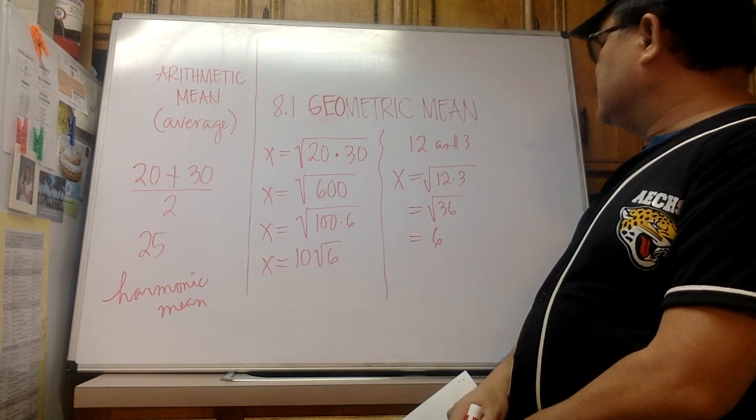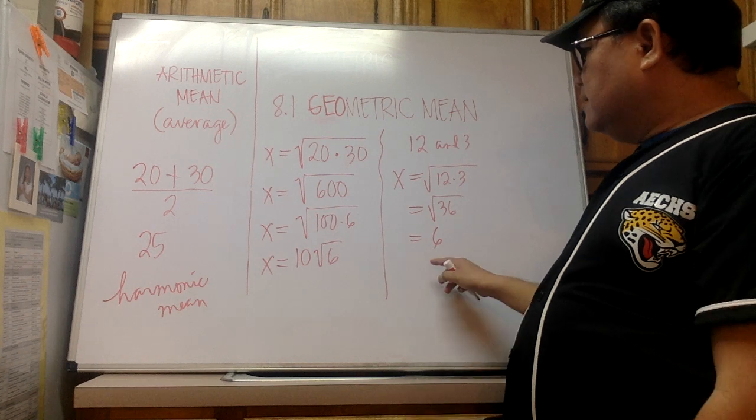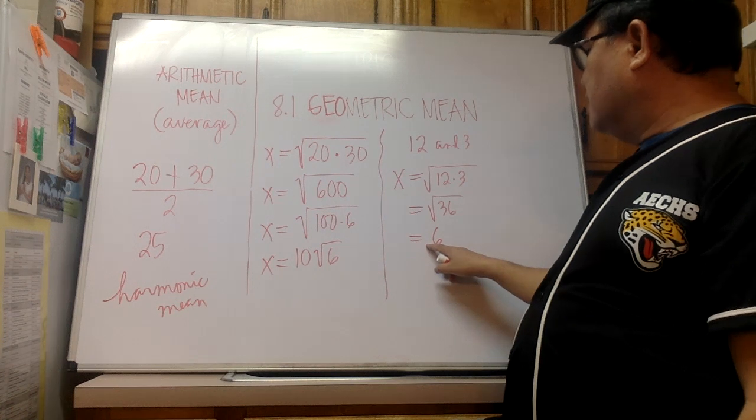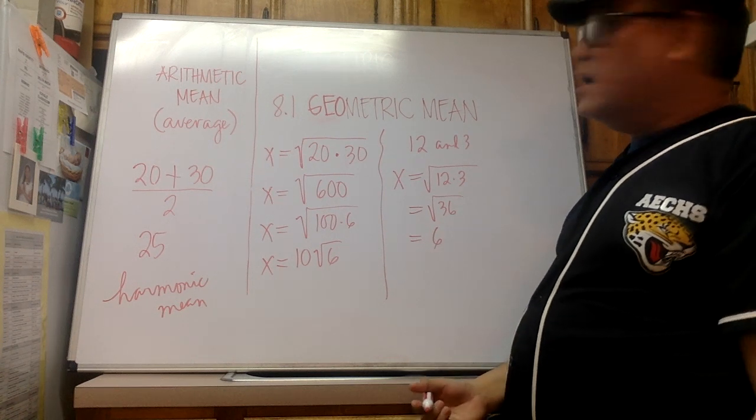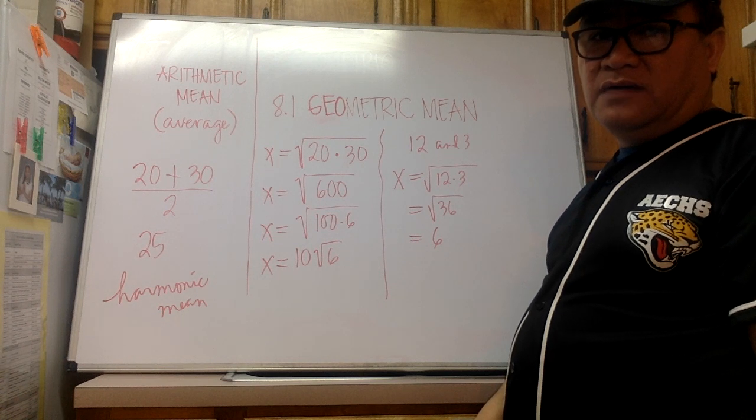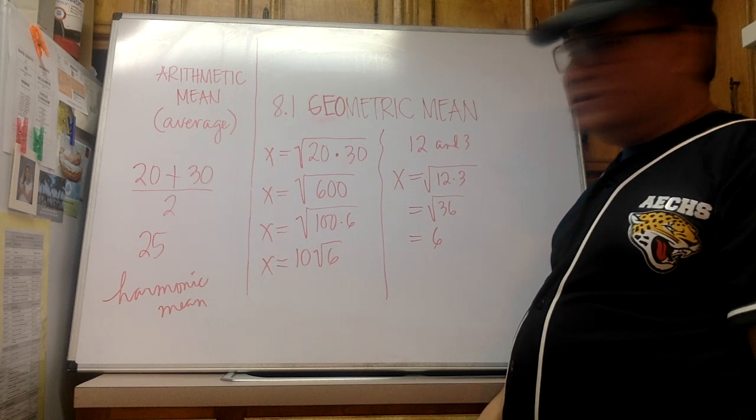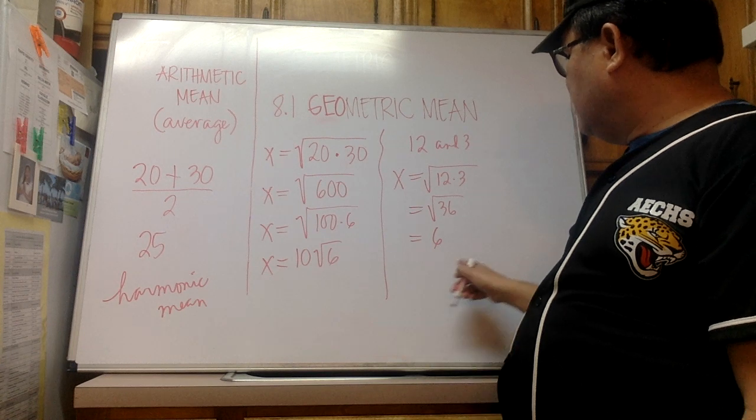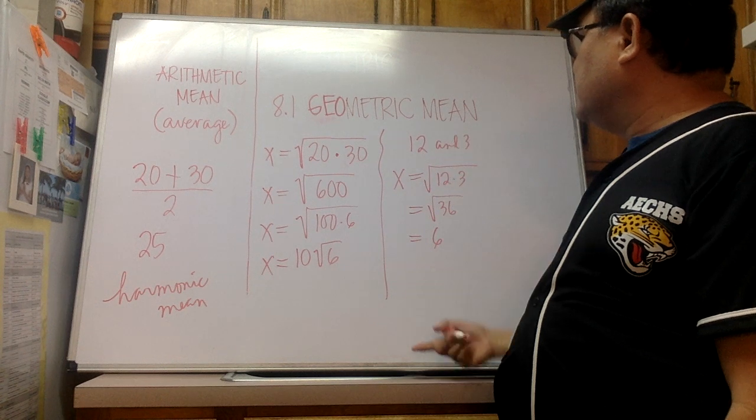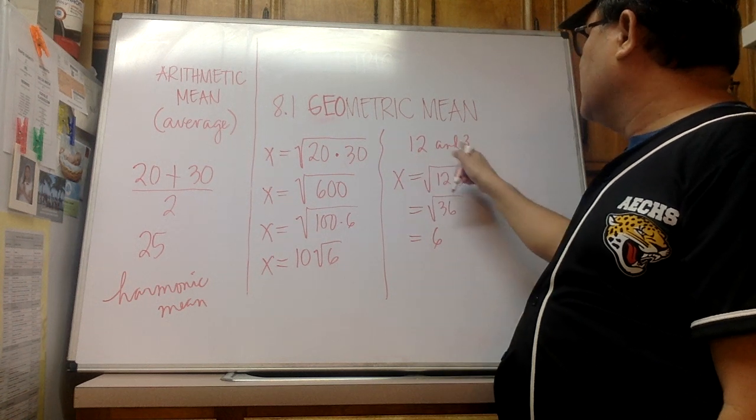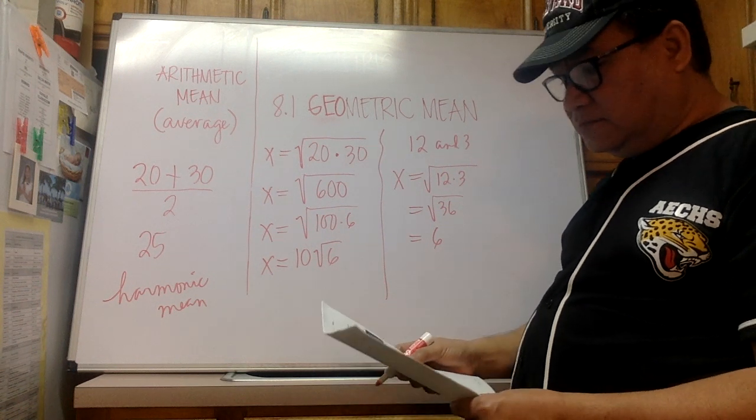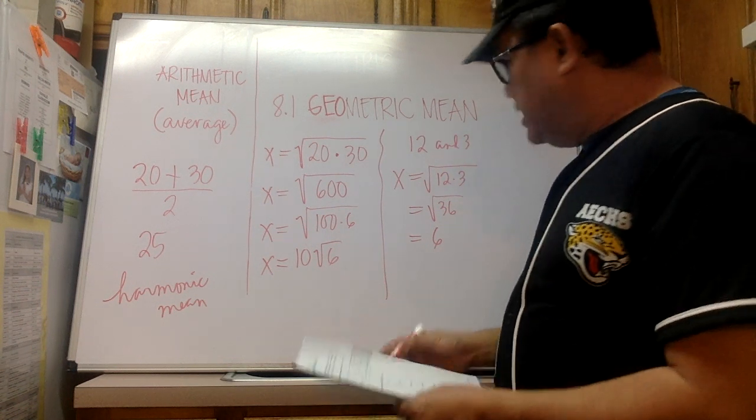So the correct answer is equal to 6. Well, in the past we've talked about having positive and negative values for a square root, but for the geometric mean we're only interested in the positive component of the answer. So here, 6 is the geometric mean between the numbers 12 and 3. This is example A in your packet. Let's look at example B in your packet.